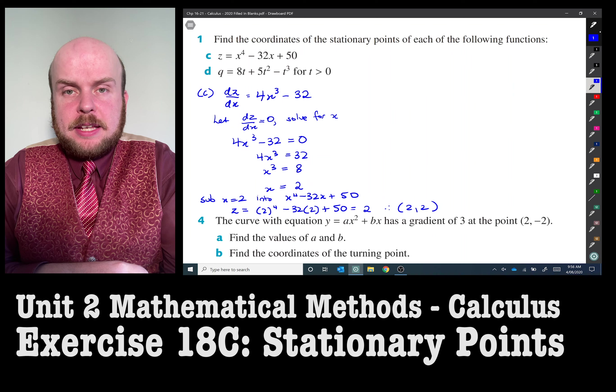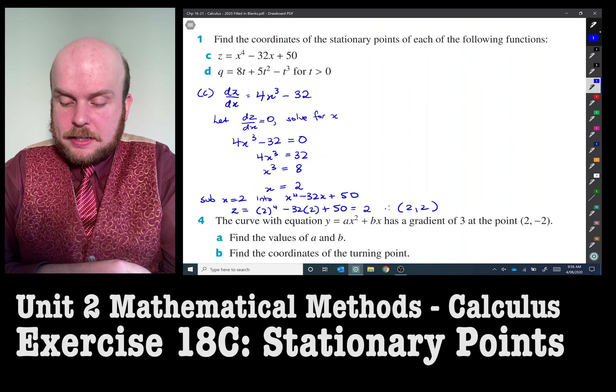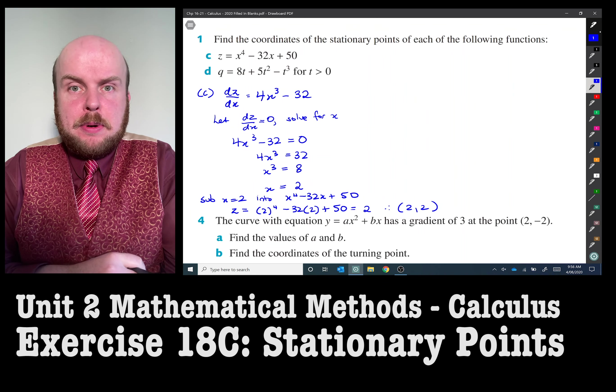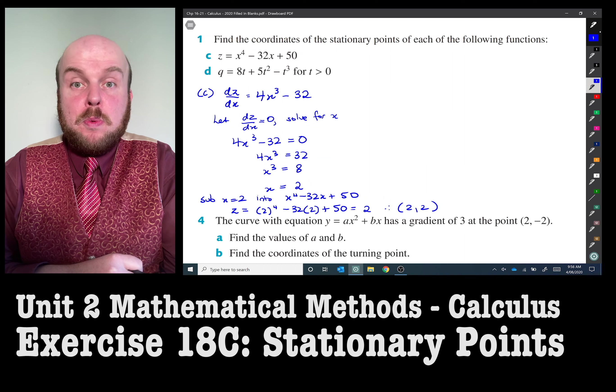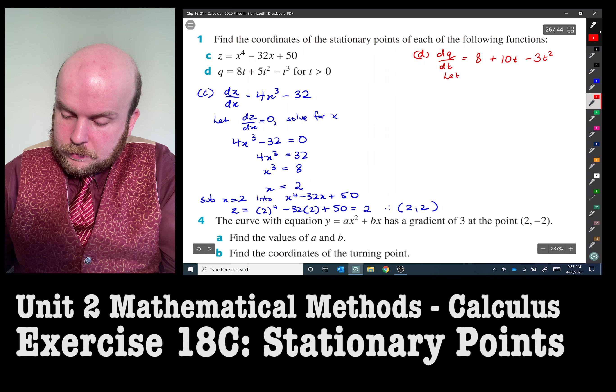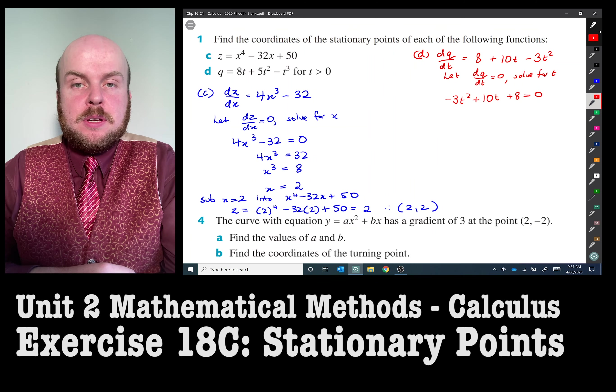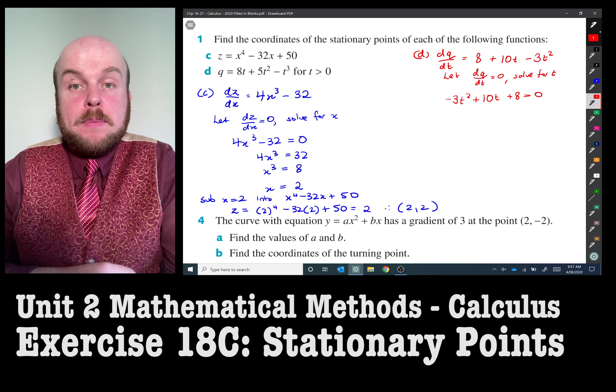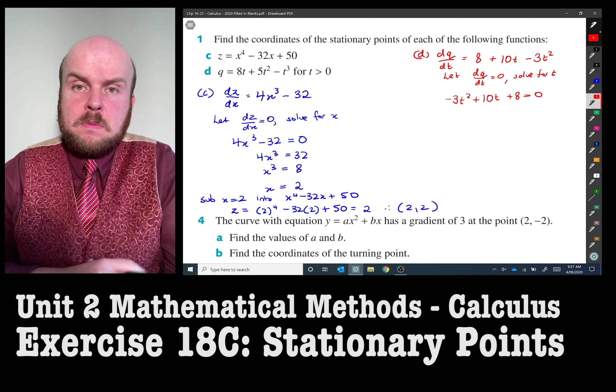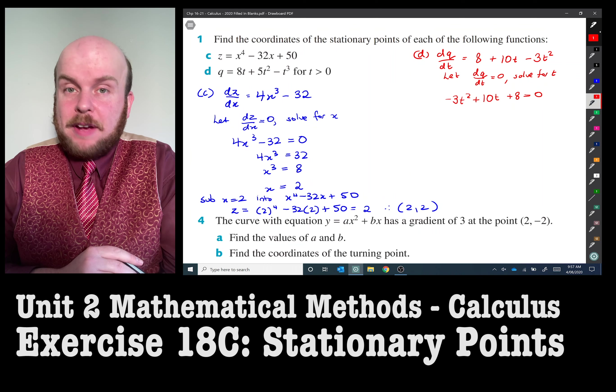We're going to do the exact same procedure for option d. You'll notice here that t is greater than zero in this case. So that means if we happen to stumble upon any t values that are less than zero, we can discard them. In this option, this is not quite as simple as the other one because we have ended up with a quadratic equal to zero, and we can't just put all the numbers on one side and all the t's on the other. So we'll need to factorize this.